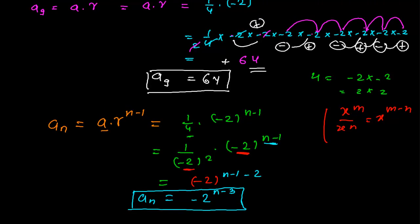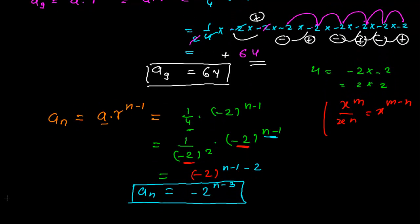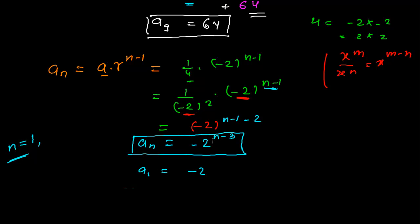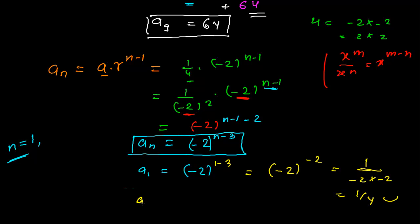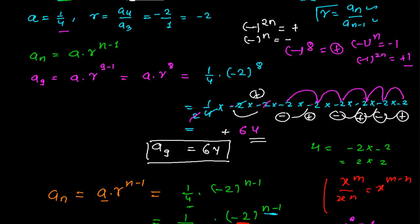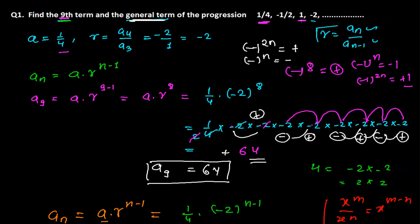Let's verify. For n=1: a₁ = (-2)^(1-3) = (-2)^(-2) = 1/((-2)×(-2)) = 1/4. We get the correct first term. For n=3: a₃ = (-2)^(3-3) = (-2)^0 = 1, because x^0 = 1. Checking our sequence: first term is 1/4, third term is 1 — both match correctly.